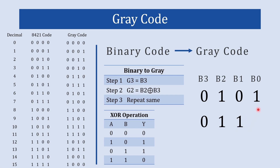Again we follow the same process for b0 XOR b1 — both digits are different, so we write 1. The final answer is 0111. Let us verify: 0101 in binary is decimal 5, and the gray code equivalent to 5 is 0111. That is how you convert binary to gray.